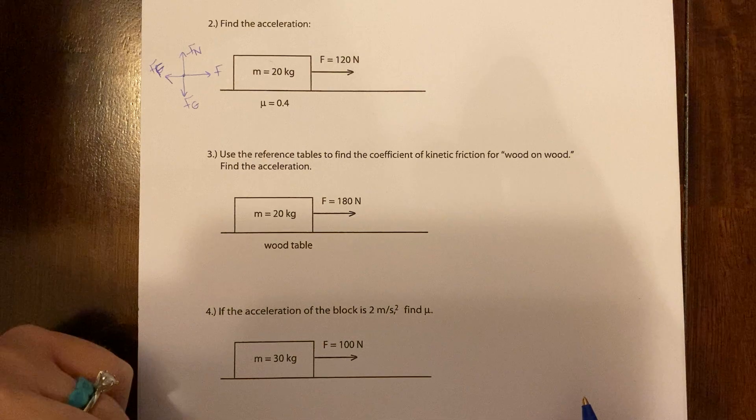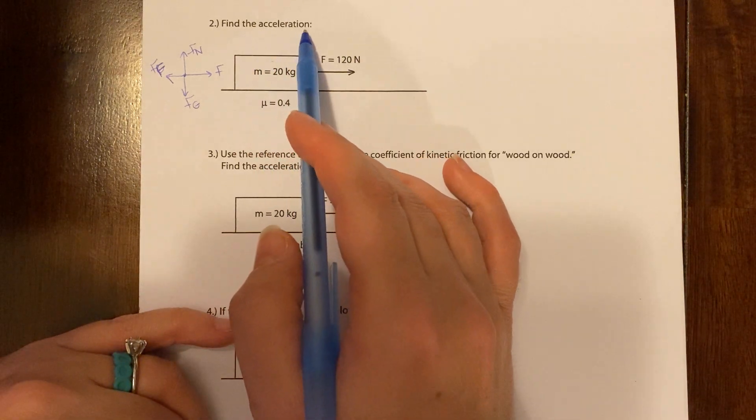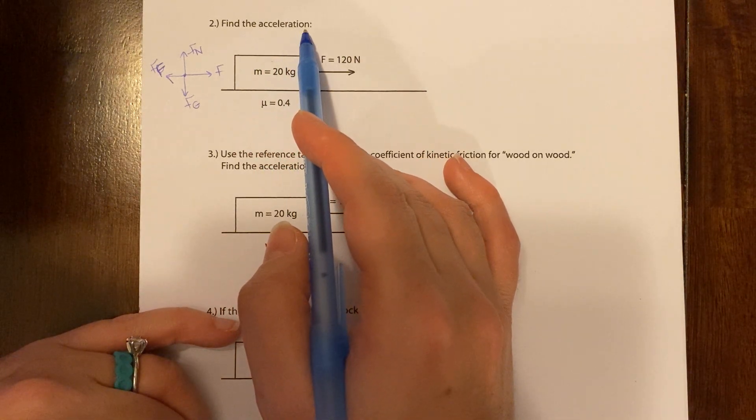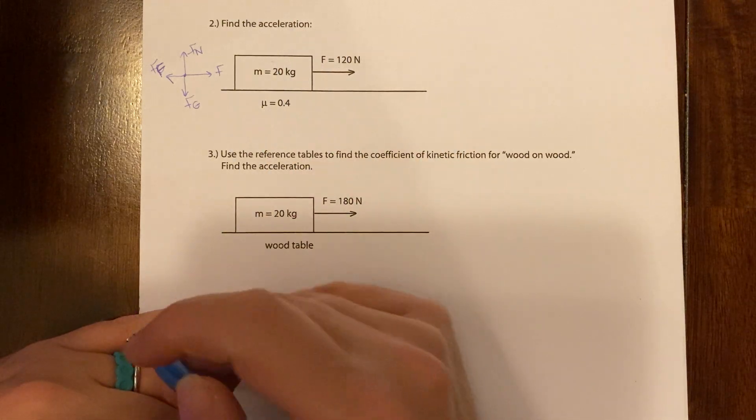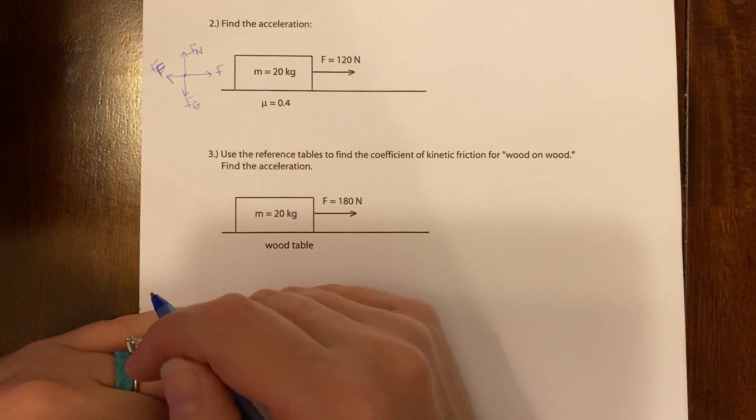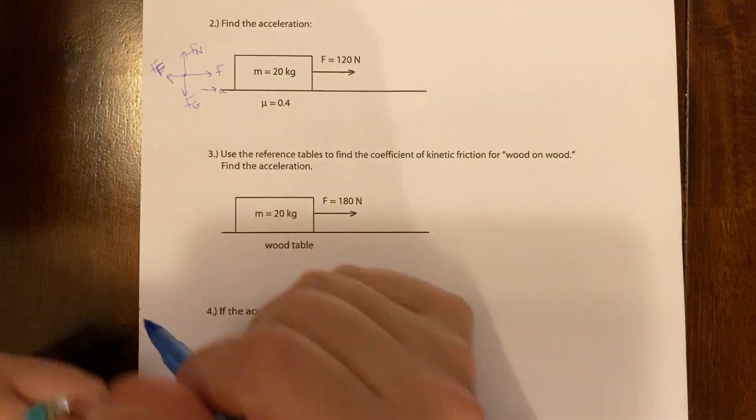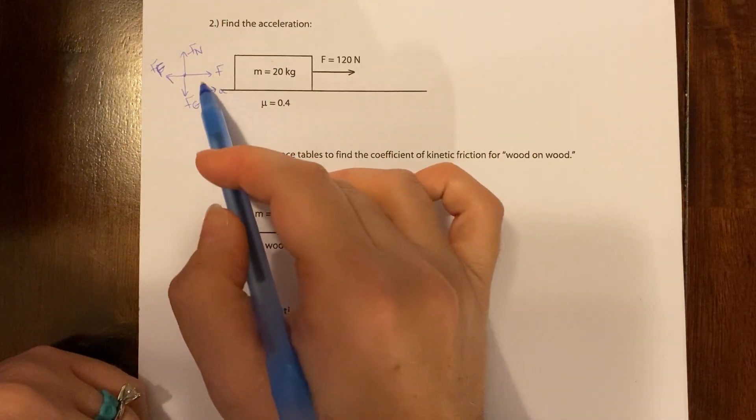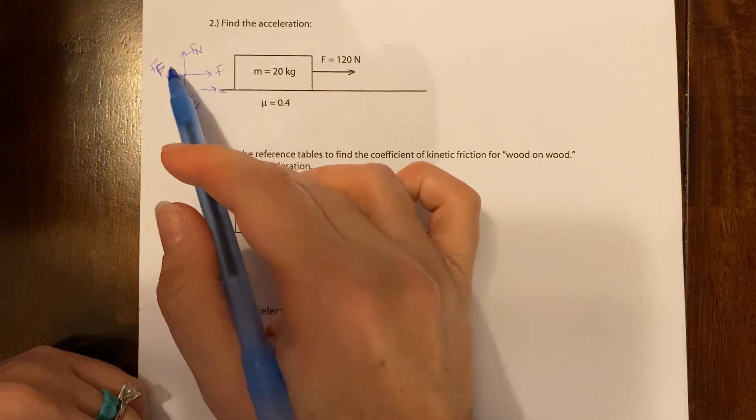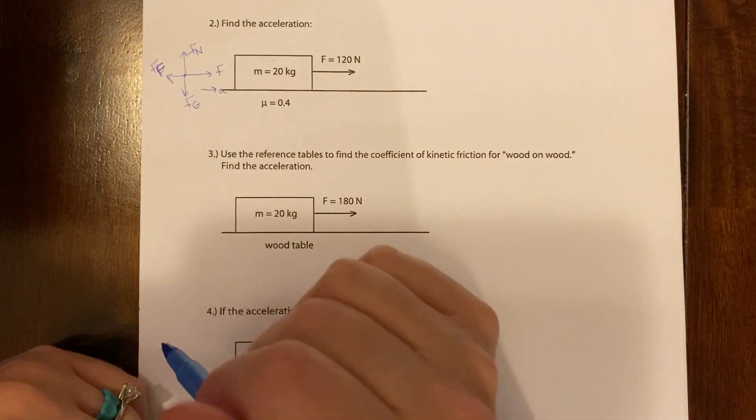We're asking yourself, is there acceleration? Well, you're asked to find the acceleration, so I certainly hope there's acceleration. What direction do you think it would be accelerating? I'm with you. I think it's moving to the right. Okay, and again, remember this is like that third wheel. It doesn't really go on the free body diagram. It just goes near it.